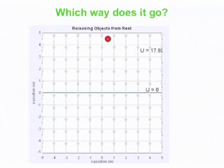Let's start with a red object — this could represent a baseball or a positive charge. There are downward-directed arrows representing a uniform field directed downward. U equals zero is the horizontal line in the middle of the screen, and the object has a potential energy of positive 17.9 energy units.